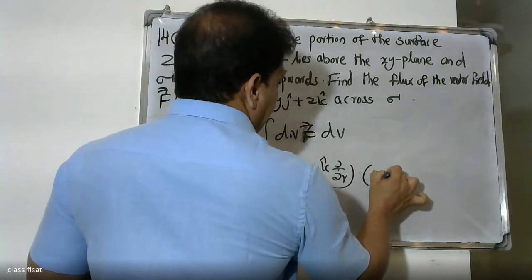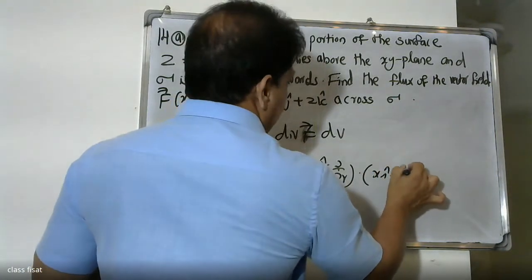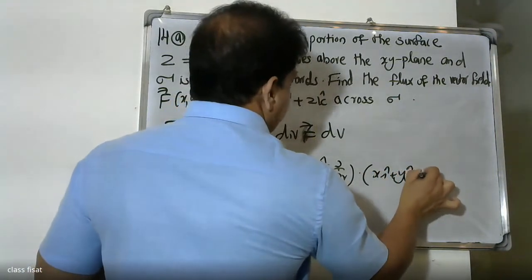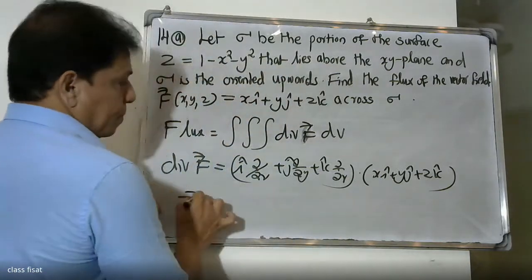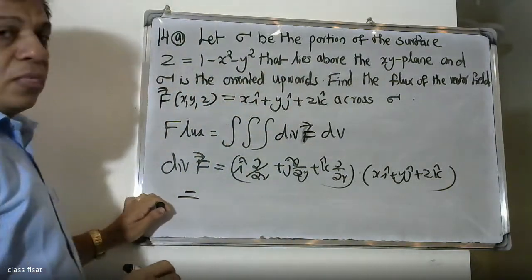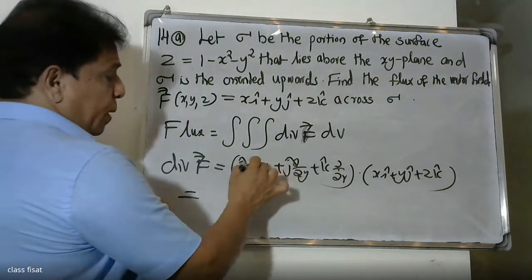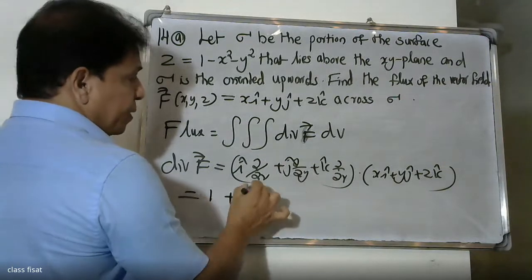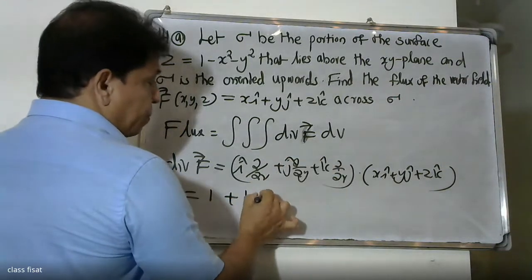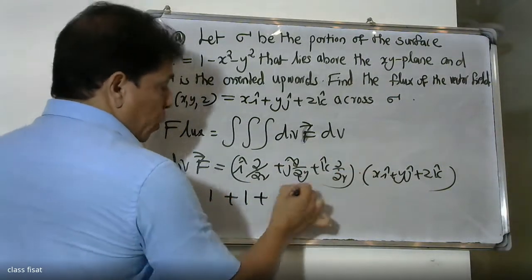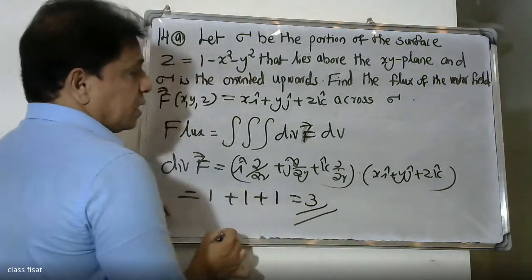Applying the divergence to F = xi + yj + zk: d/dx of x plus d/dy of y plus d/dz of z, each partial derivative gives 1, so divergence of F equals 3.